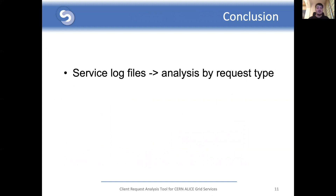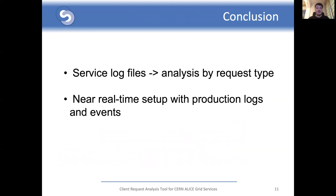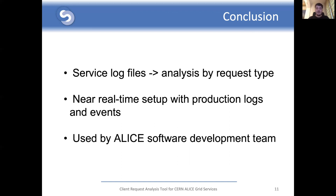In conclusion, this project consists of creating a request analysis tool that would process AliEn API service log files and JALIEN events, analyze them, index them, and put them in multiple visualizations that offer valuable insights like average duration, percentile ranks, or processor load based on request type. Both services are currently using the presented solution set up on the custom ALICE-owned instance used for testing, processing production logs and events in a near real-time manner. The ALICE software development team has also started using the Kibana dashboard to analyze various requests and find further opportunities for development of JALIEN.